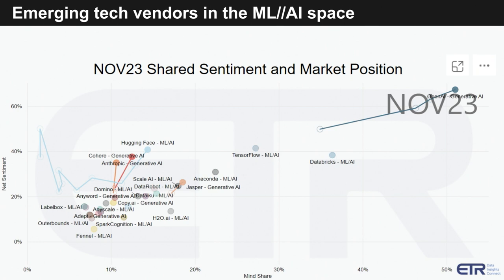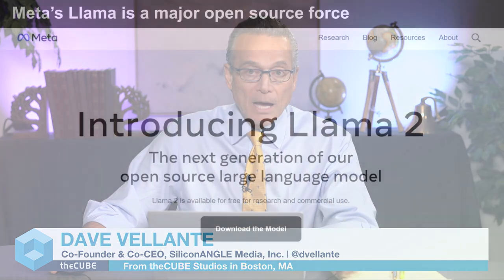And two, OpenAI came on the scene and has dominated — you can see there in the upper right the lines show the progression over time across different survey periods. You can also see the progression of Hugging Face — they've made tremendous progress on both dimensions. And you see Cohere, Anthropic, and Jasper AI, which is a co-pilot for marketing teams. You can see the mix of other ML and AI players, which include the always prominent Databricks. But one major force that hasn't shown up in the ETR dataset just yet is Meta's Llama 2.